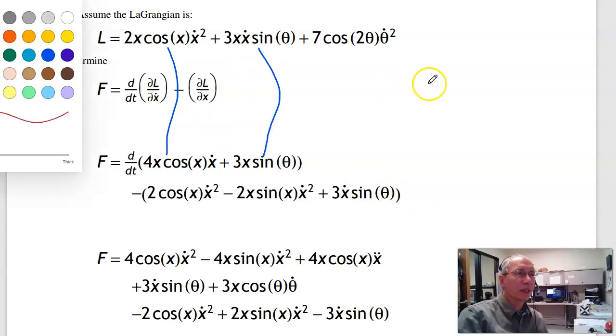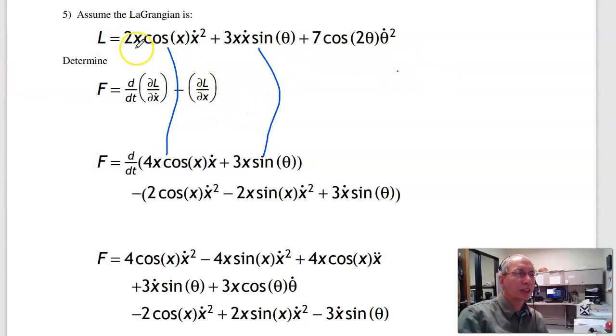For the partial with respect to x, treat x as your variable. Everything else is a constant. So derivative with respect to x... derivative with respect to cos(x)... and then here's an x.